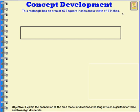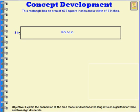This rectangle has an area of 672 square inches and a width of 3 inches. So let's put that information in. I know that this width is going to be 3 inches, and the inside of the rectangle is going to be 672 square inches, because the square inches tells me that it's the area. To figure out the area, we multiplied length times width. So the width was 3 inches, but the length we don't know. That tells us that 3 inches times this unknown length would give us 672.